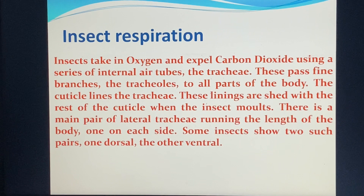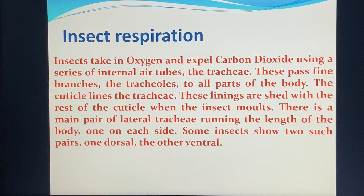Insects take in oxygen and expel carbon dioxide through a series of internal branching tubes called tracheae. These pass fine branches to all parts of the body. The cuticle lining of these tracheae is shed with the rest of the outer lining when the insect molts.